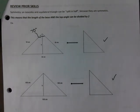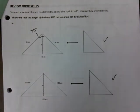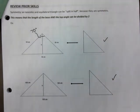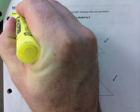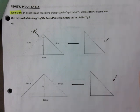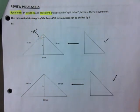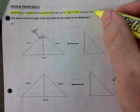Page two — I'm just going to have my original here just in case I miss anything. I'm going to review some previous skills. Symmetry: when something is symmetric it means you can cut it in half and you have exactly two same halves. An isosceles as well as an equilateral triangle can be split in half because they are symmetric.